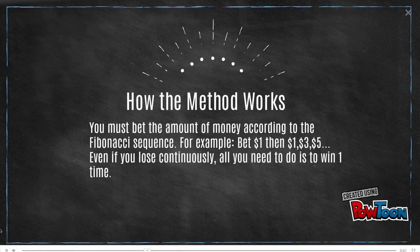How does the method work? You must bet the amount of money according to the Fibonacci sequence. For example, bet $1, then $1, then $3, then $5, and so on.